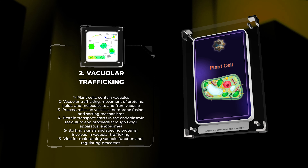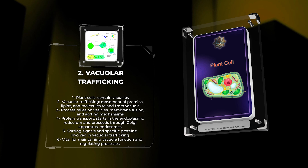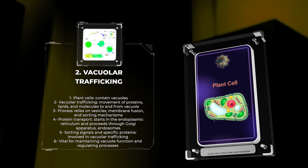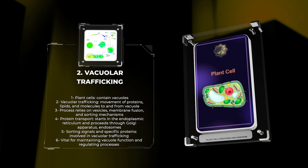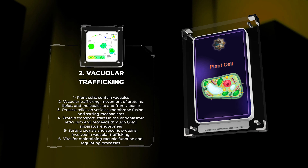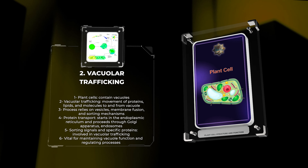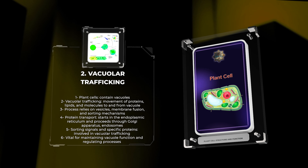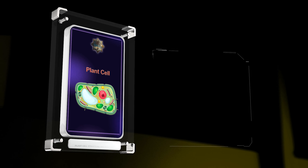Plant cells contain membrane-bound organelles called vacuoles that are crucial for various cellular processes. Vacuolar trafficking involves the movement of proteins, lipids, and other molecules to and from the vacuole. This process relies on vesicles, membrane fusion, and sorting mechanisms. Protein transport to the vacuole starts in the endoplasmic reticulum, then proceeds through the Golgi apparatus, endosomes, and finally reaches the vacuole. Sorting signals and specific proteins are involved. Once vesicles reach the vacuole, they merge with its membrane, delivering their cargo. Vacuolar trafficking is vital for maintaining vacuole function and regulating processes like storage, degradation, and defense.